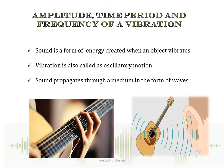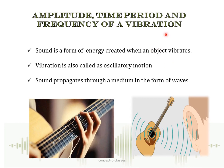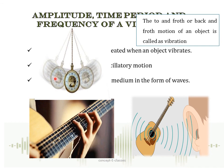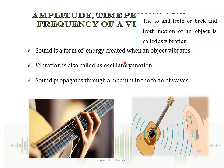The first topic of Part 2 is amplitude, time period, and frequency of a vibration. Sound is a form of energy created when an object vibrates. Vibration is the to-and-fro or back-and-forth motion of an object. For example, when a person plays a guitar, the to-and-fro motion of the string is termed as vibration, and when the string vibrates, sound is produced. Vibration is also called oscillatory motion — a swinging pendulum is an example, with repeated to-and-fro motion from the mean position.